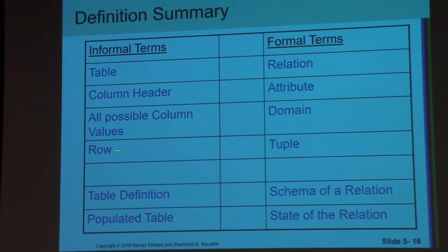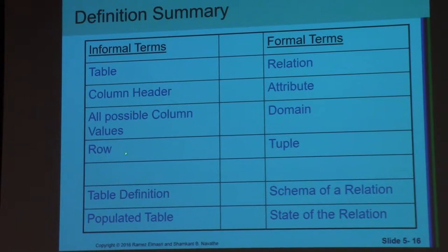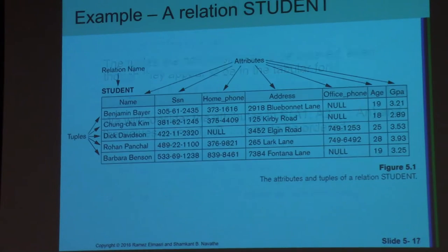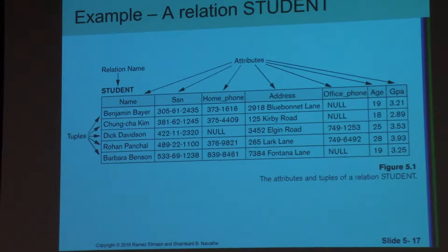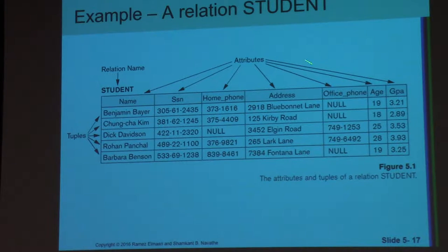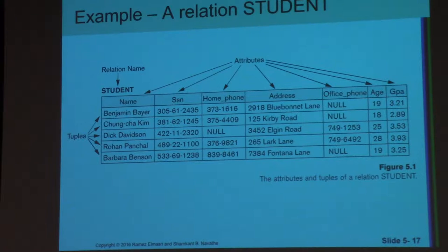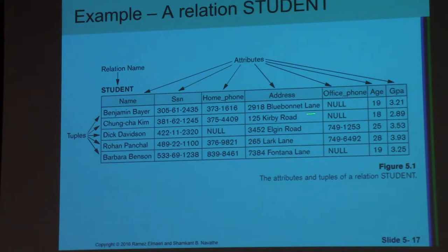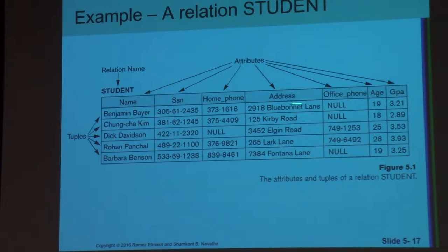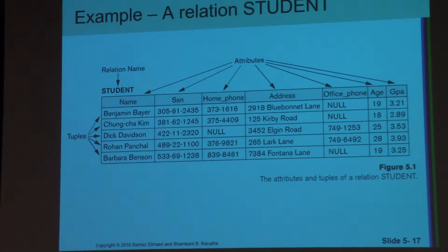Each row of data is called a tuple, but in DBMS it is called a row. Here is an example of the student relation — a group of tuples or a group of attributes. If there is missing data, we need to put null; otherwise the record cannot be managed. We use the schema to insert or create a tuple, and null is how we address missing values. Because of this, the relational database model is very strict — not flexible.